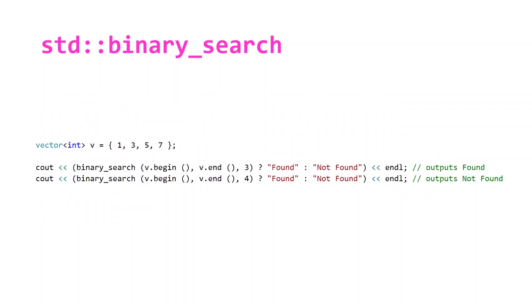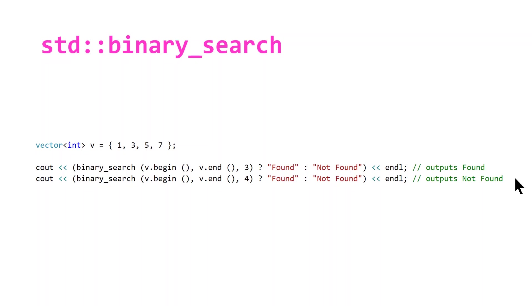Here's a simple example. We have a vector of integers initialized using an initializer list and we call binary_search. The first two parameters are iterators pointing to the begin and end of the range we want to search in, and the third parameter is the value we are looking for. The three exists in our vector so we're going to output 'found' because this function returns true. And because we're searching for four, which doesn't exist in our vector, binary_search will return false and we will output 'not found'.